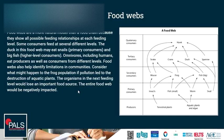Food webs are a more natural model than a food chain because they show all possible feeding relationships at each feeding level. Some consumers feed at several different levels. The duck in this food web, for example, may eat snails — primary consumers — and big fish — higher level consumers. Omnivores, including humans, eat producers as well as consumers from different levels. Food webs also help identify limitations in communities. Consider what might happen to the frog population if pollution led to the destruction of aquatic plants — the organisms in the next feeding level would lose an important food source, and the entire food web would be negatively impacted.